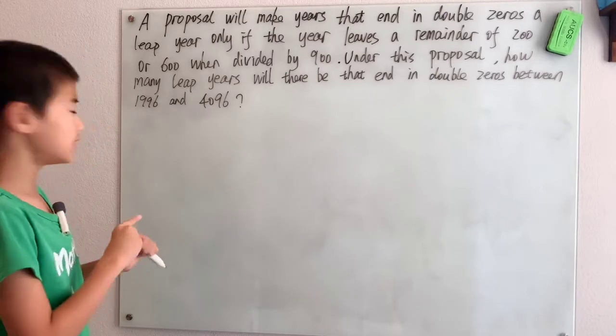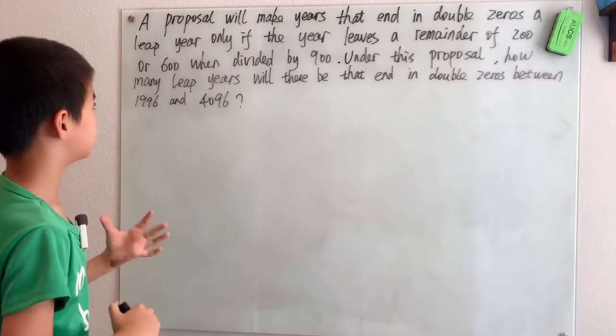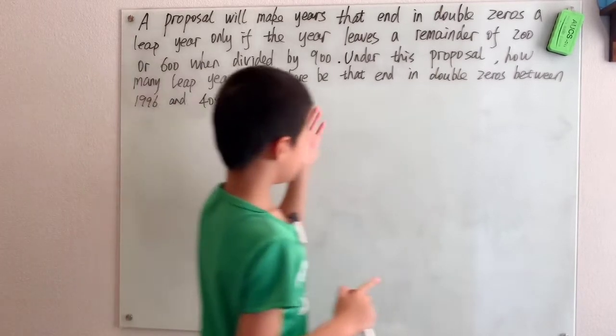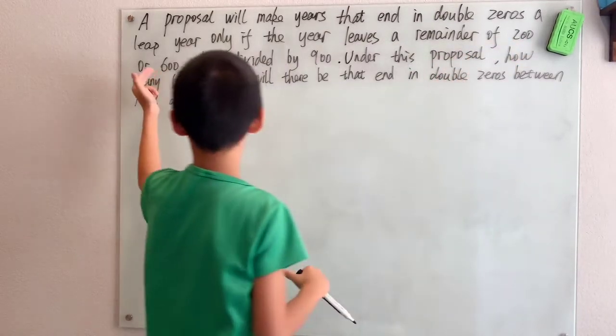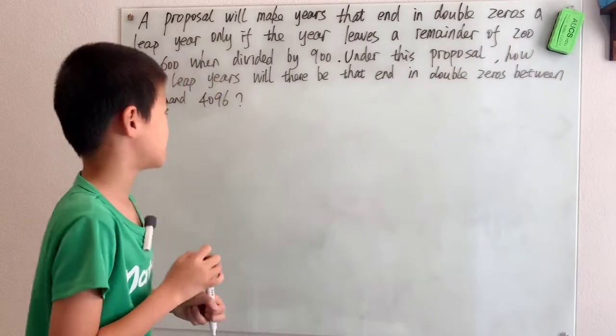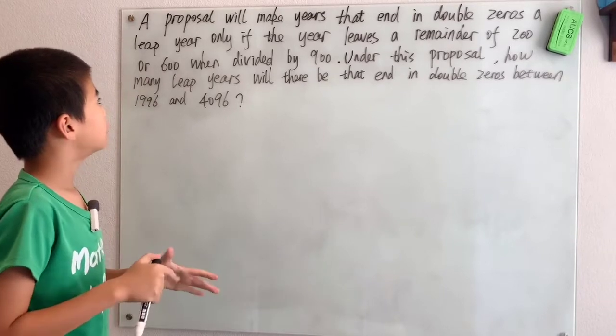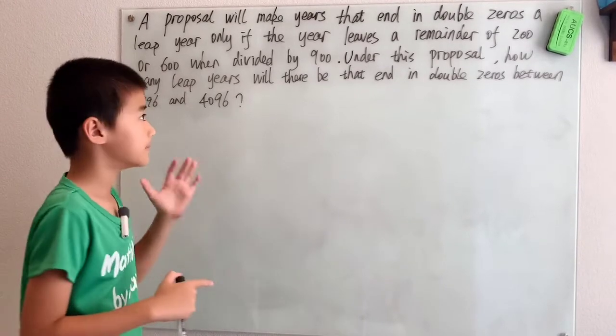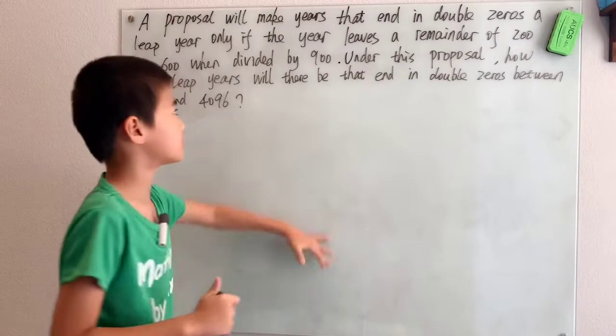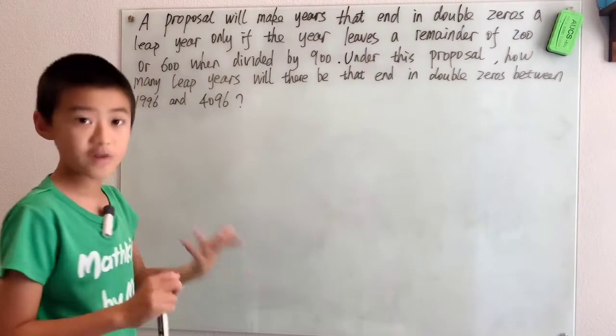In this problem, I can do a little bit of logical thinking. A leap year has to have a remainder of 200 or 600 when it's divided by 900. That means it has to be 200 or 600 higher than a multiple of 900.